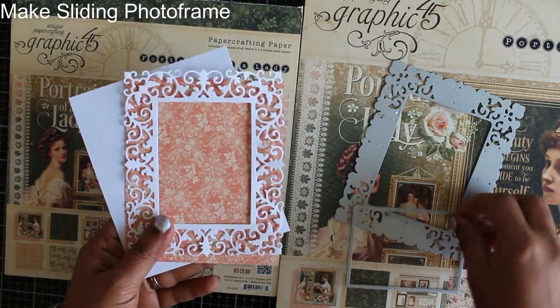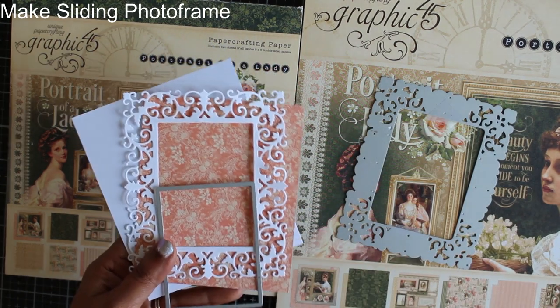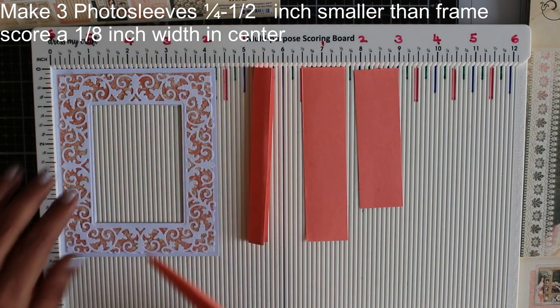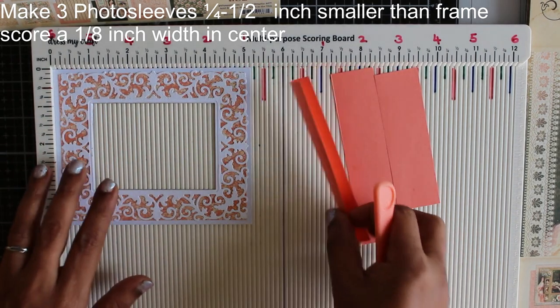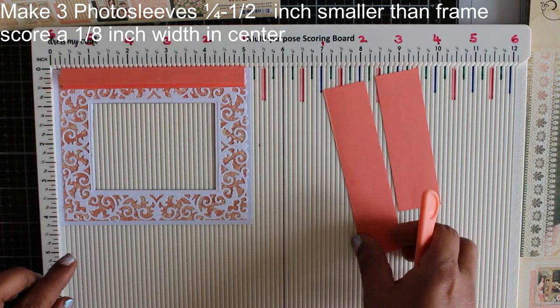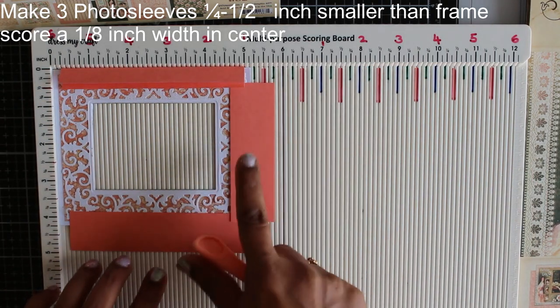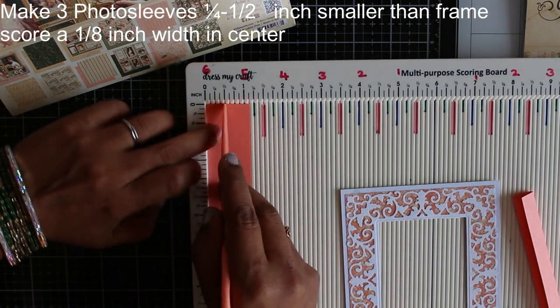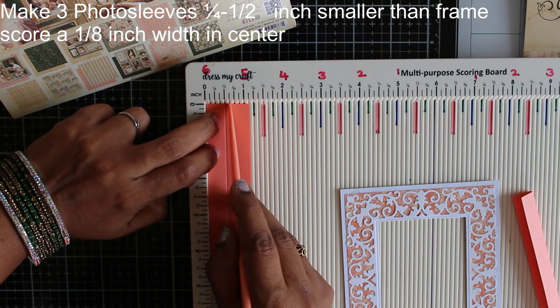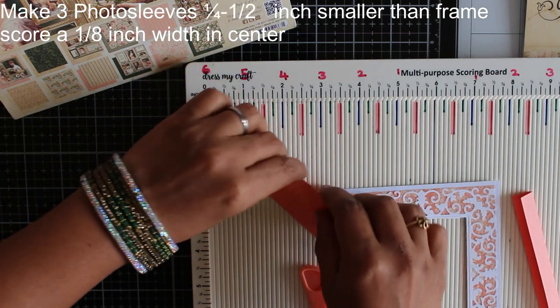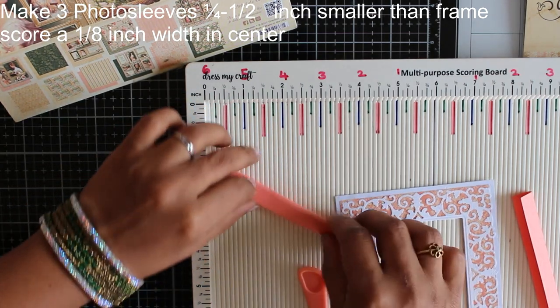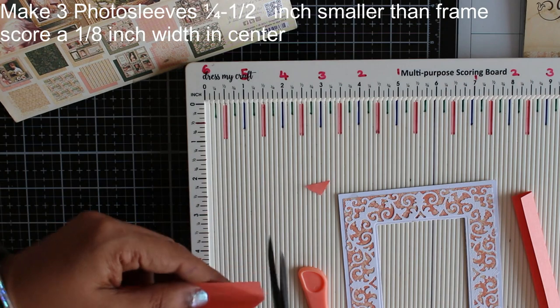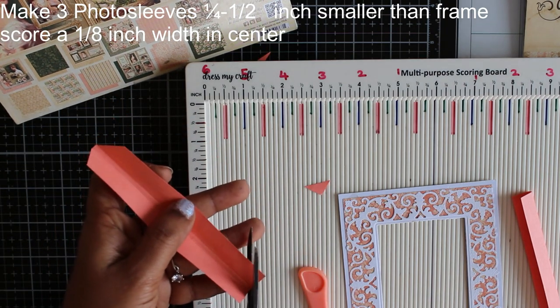Now let's make the sliding photo frame. Use dies or manually cut photo frames as shown in the picture. Make photo sleeves that is you need to make three photo sleeves which will go on the sides of the photo frame as shown. And one in the lower part. The length of your photo sleeve will depend on the die cut or photo frame you have created. So my measurement need not be what you are going to be using. The point is to create a photo sleeve which has a 1/8 inch width in the middle. This helps you to slide your photos in and out easily without getting stuck.